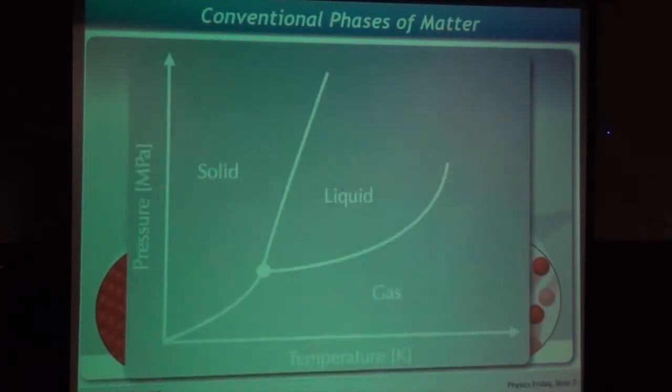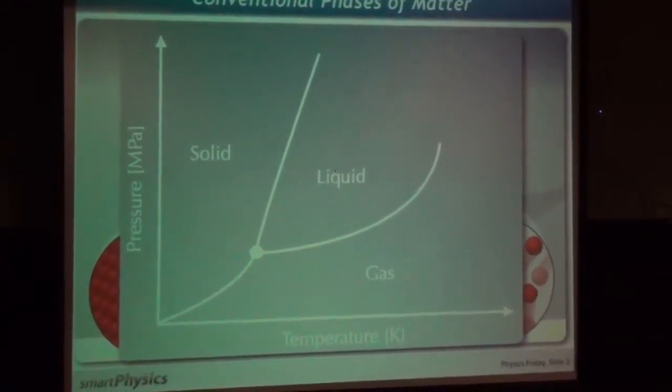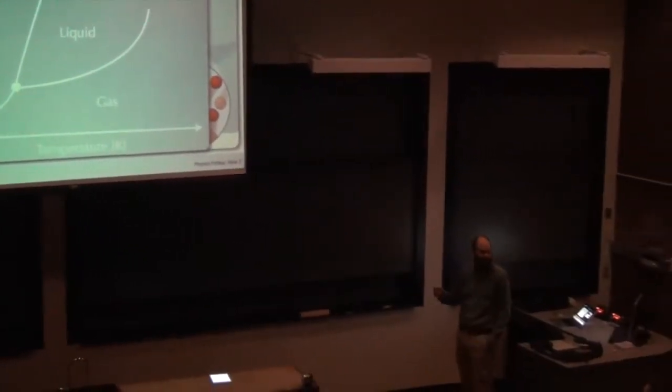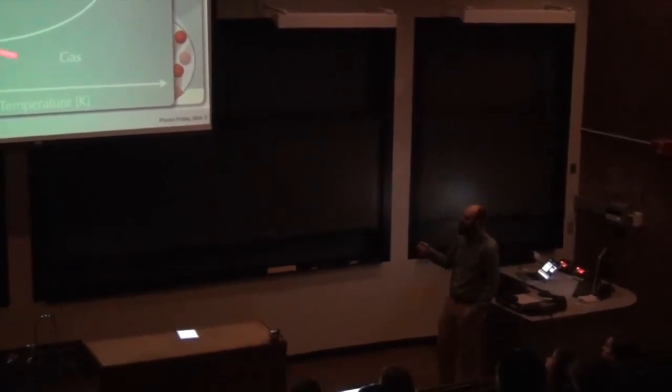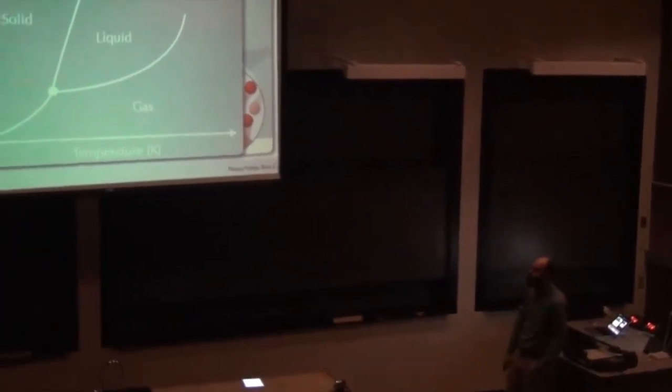So these can be put on a phase diagram that looks like the following. So we have pressure on the vertical axis and temperature on the horizontal axis. As we cool down, we go from a gas into a liquid into a solid, or directly from a gas to a solid, there's a triple point. We can go around. So this is really why gases and liquids are not distinct. Because at very high temperatures or high pressures, we can actually go around this line and not break from the gas to the liquid. This is a very conventional picture of the phase of matter.